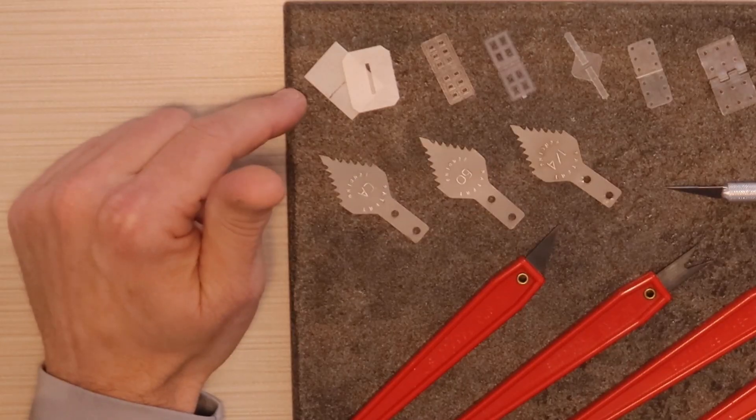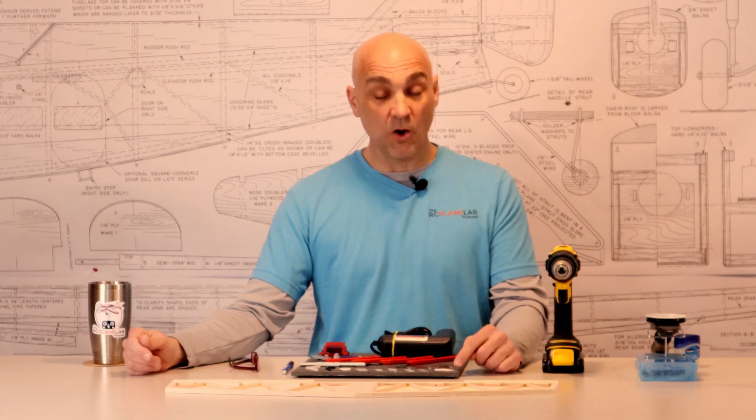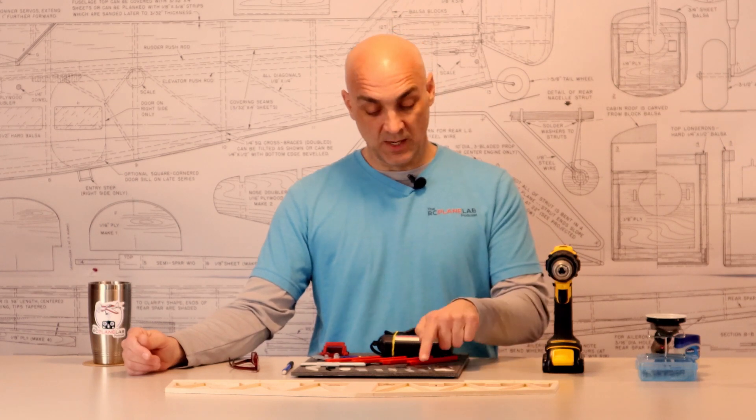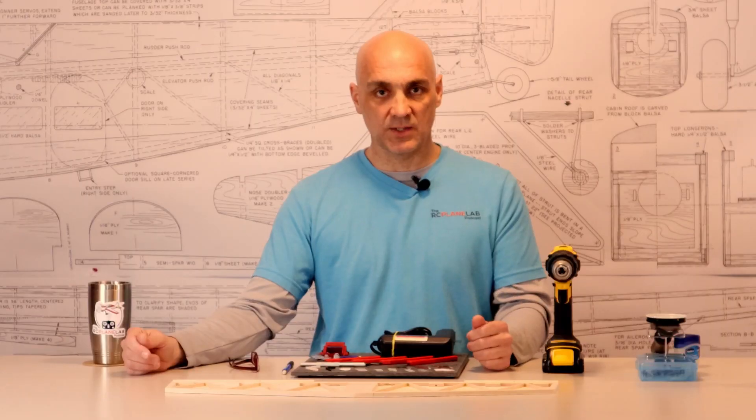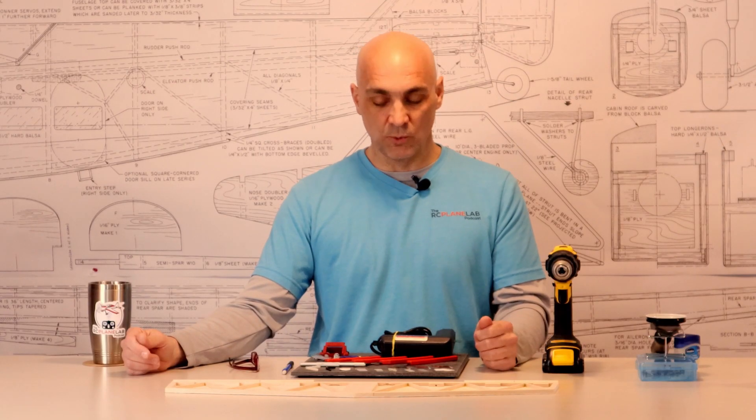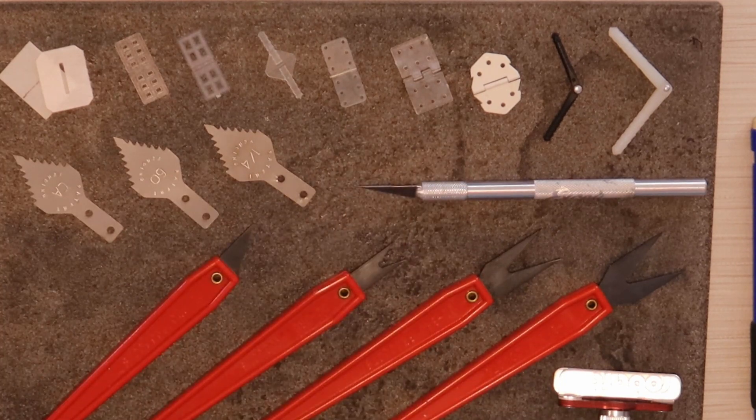Starting on the top left here is the Easy Hinge, called Easy Hinge because it's so easy to use, also known as a CA hinge. Then we have the flat nylon style hinges that use the same type of tools to install them. And then we have the nylon pinned hinges there.